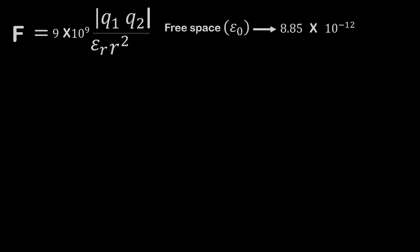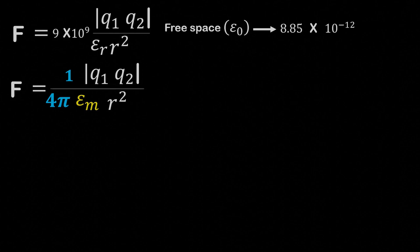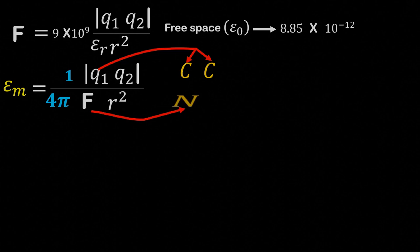Now let's find the SI unit of permittivity. When we modify the formula for force, the formula of permittivity can be written like this. We know that the unit of charge is Coulomb, the unit of force is Newton and the unit of distance r is meter.